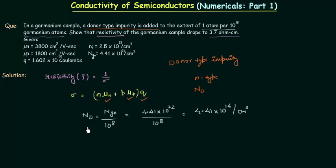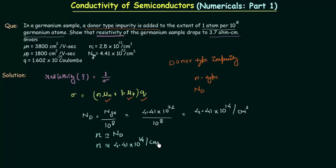Now we have N_d. We know it is n-type material, and from the mass action law, in n-type material the free electron concentration is approximately equal to the density of donor atoms. So small n is approximately equal to N_d, giving us n equal to 4.41 × 10^14 per centimeter cube.